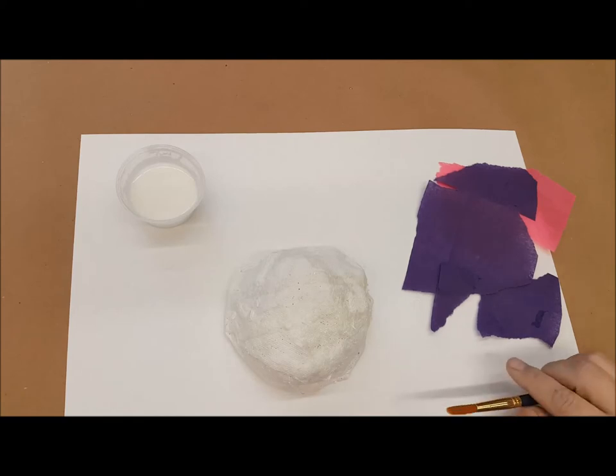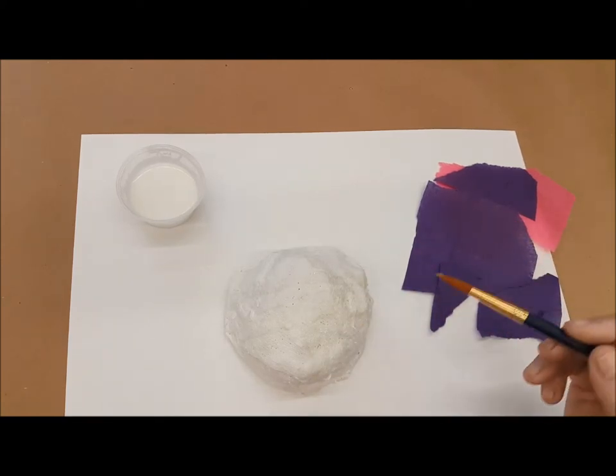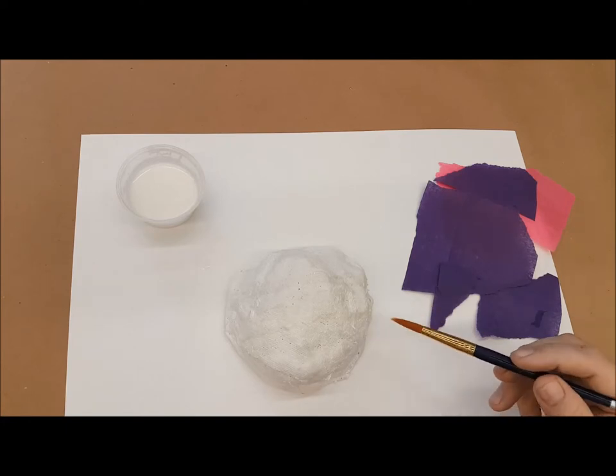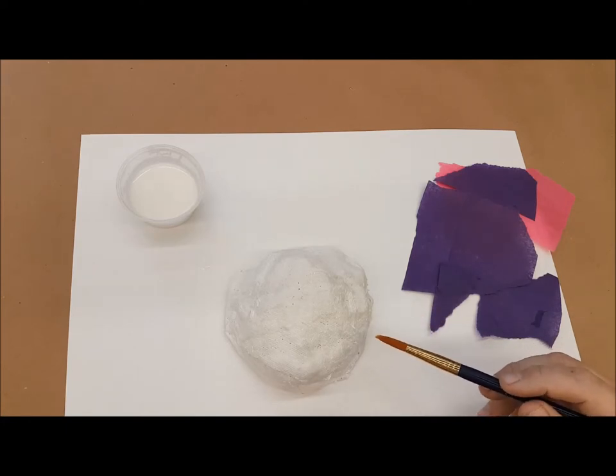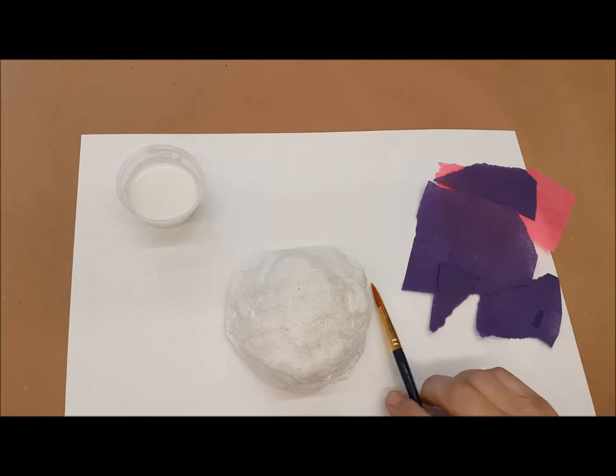Sometimes when you work with plaster, it's really nice to give it a coating so that you can color it. A lot of times people can just paint on plaster, and you could certainly use watercolors or acrylics, but I find that adding a coating of tissue paper is really lovely.